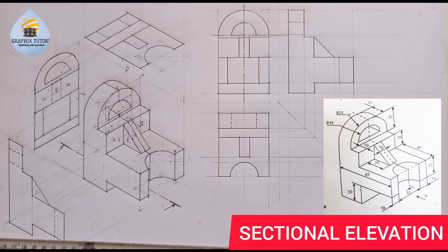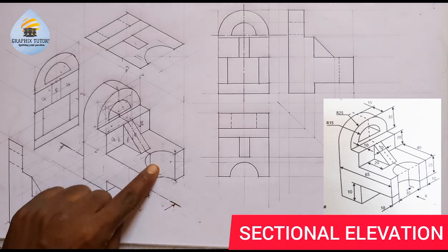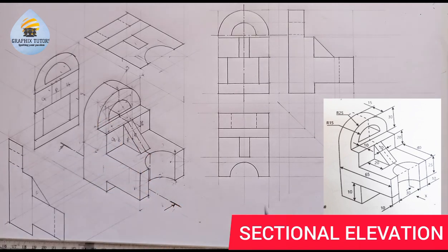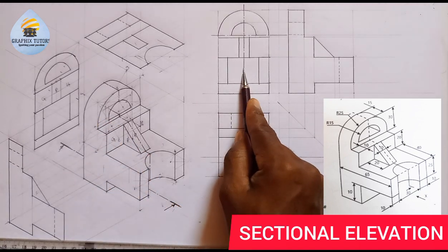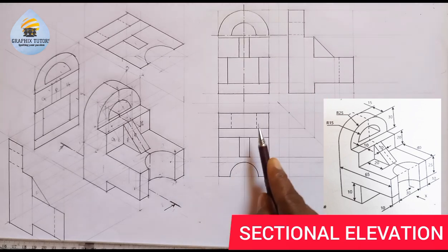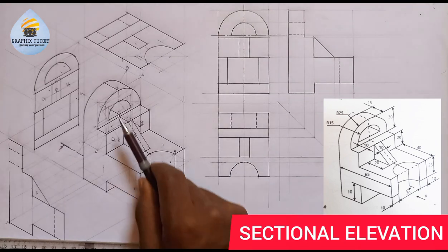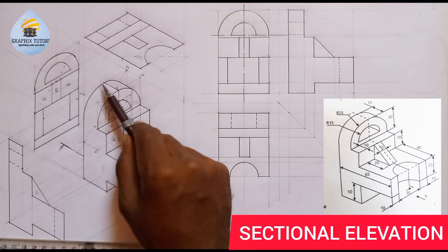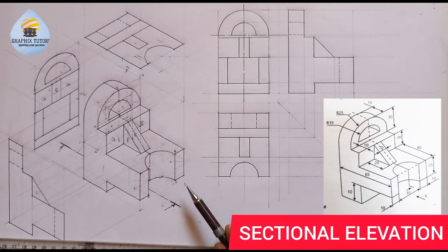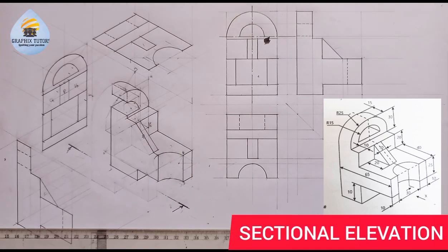Let's proceed. If I cut this into two, we know this is the front elevation, the end view, and the plan. So if I cut this into two and look in this direction, this is what I am going to be having.